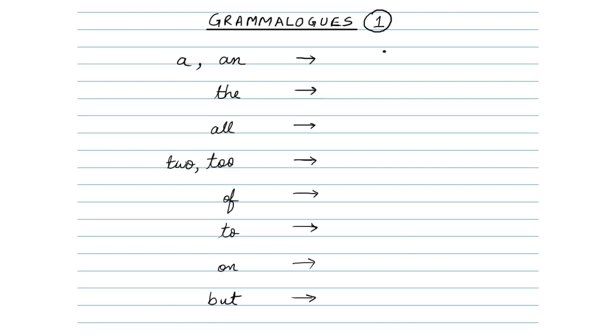Next, we have 'all'. 'All' is represented by making a tiny dark stroke like this. Remember, this has to be made from the upwards to the downwards direction.